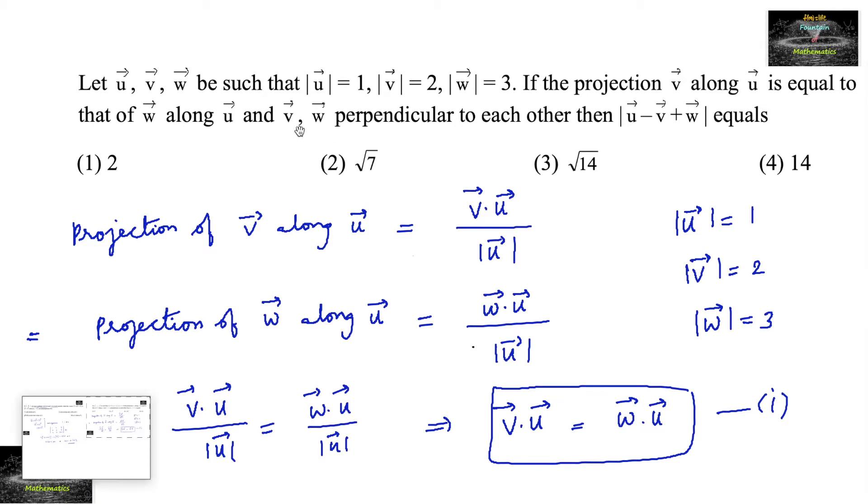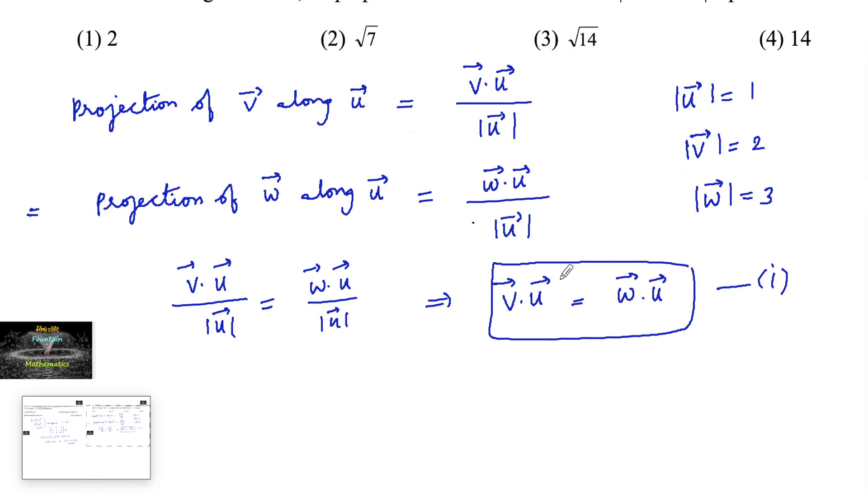And what else given: v and w are perpendicular to each other. So it is given vector v is perpendicular to vector w, which implies that v dot w equals 0 since they're perpendicular. Make this second equation.